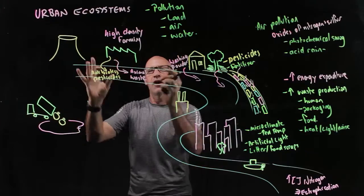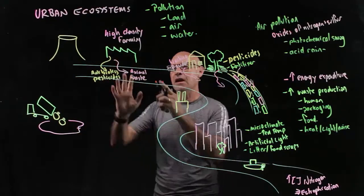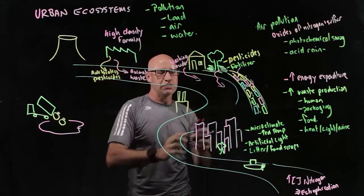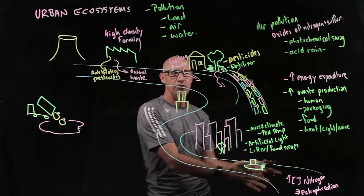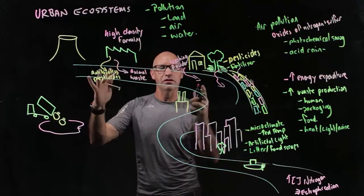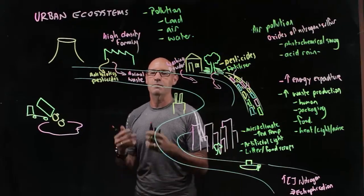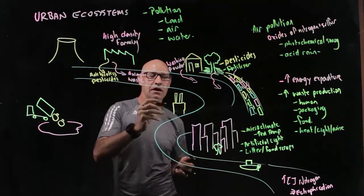So again, our high density farming can have runoff into the waterways that can contribute to eutrophication. And it decreases the quality of the waterway and pollutes it.